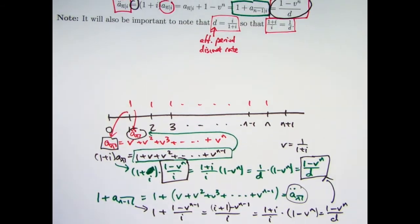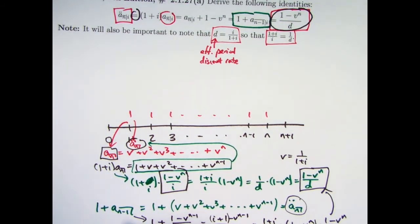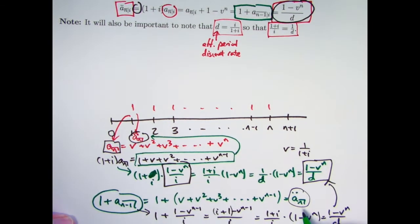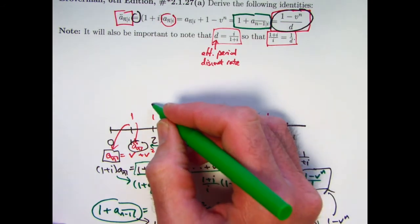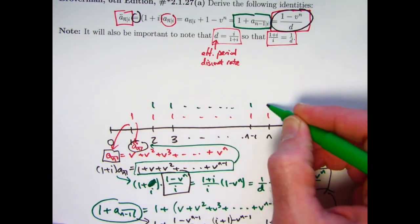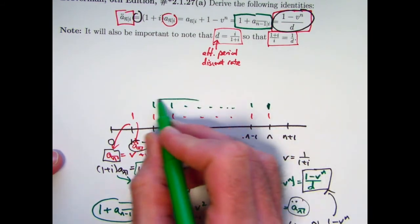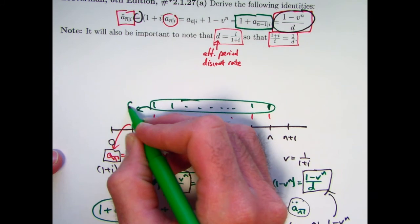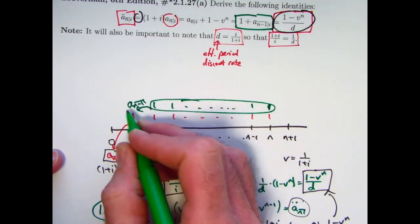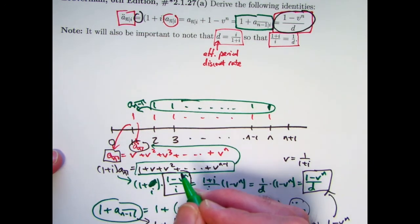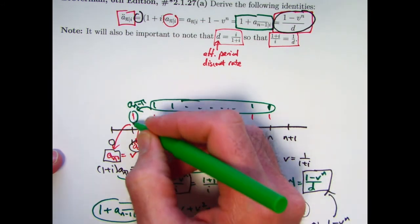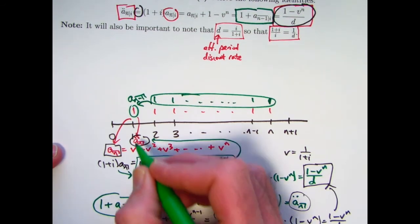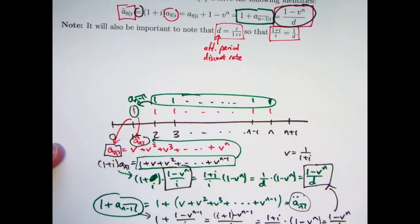Let me also think about the identity 1 plus a_{n−1} = a_n double-dot intuitively using the timeline. Consider these n minus 1 payments starting at time 1. Their present value one period before the first payment — at time 1 — is a_{n−1}. Adding 1 to that, evaluated at time 1, gives us the fact that 1 plus a_{n−1} does indeed equal a_n double-dot. That's an intuitive timeline way to think about it.